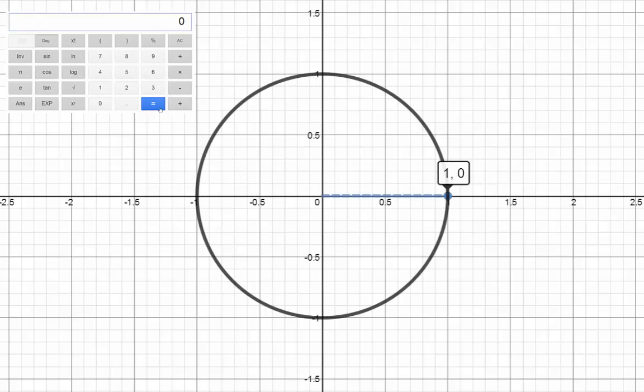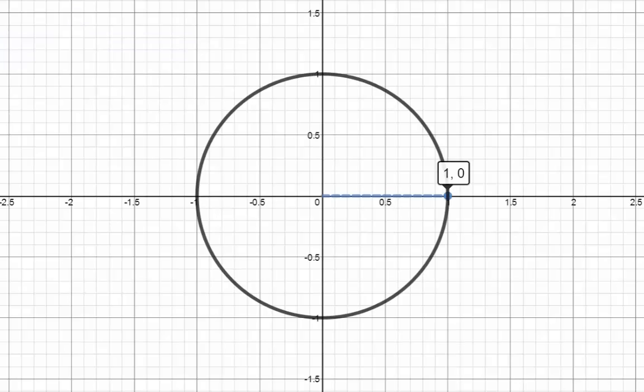There are other ways of thinking about tan, but this way is probably the simplest. If we move to 45 degrees, you can see the rise and run are both 0.707, so it's a gradient of 1. That is, tan 45 degrees equals 1.